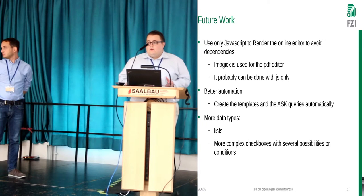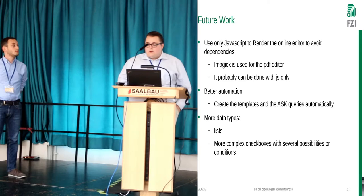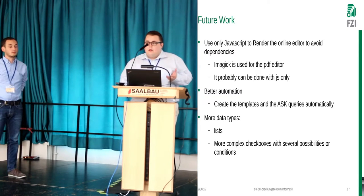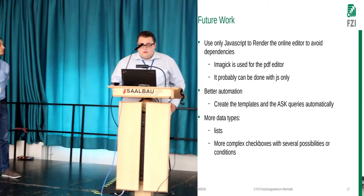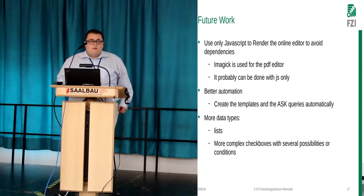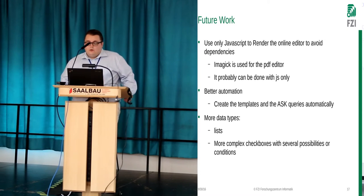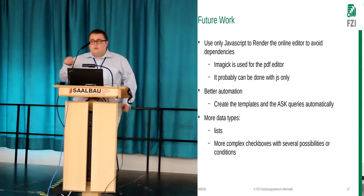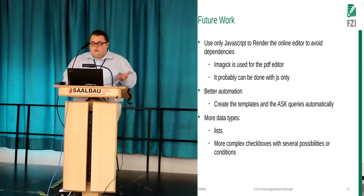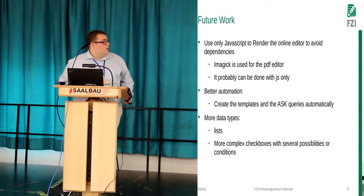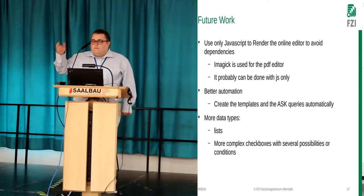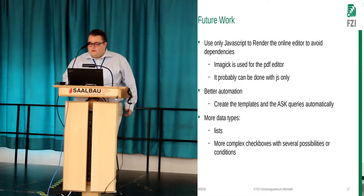We can also achieve better automation. At the moment, you have to put the template export into your template page manually. That could be made automatic. Similarly, the Ask query currently has to be written manually, but that could be automated too. Another thing is we need more data types — at the moment you have checkboxes and some variants, but things like lists are still missing. That could be done; it's just a matter of time. More complex conditional checkboxes are also needed — for example, on some PDF forms you have conditions where answering yes requires filling one section, and answering no requires filling another.